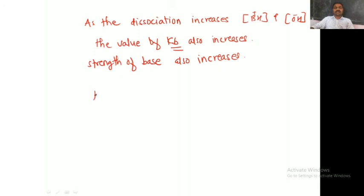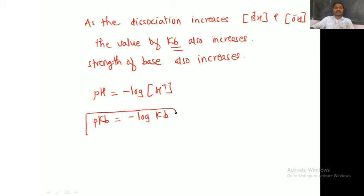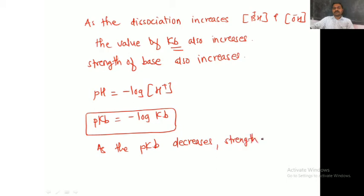Just like pH is defined as minus log of H⁺ ion concentration, pKB is also defined as minus log of KB. So pKB = −log(KB). As the pKB decreases, the strength of the base increases. Remember this: as pKB decreases, base strength increases.